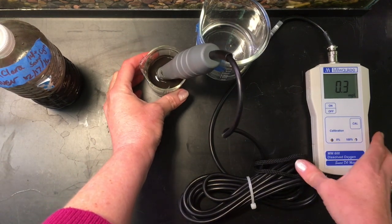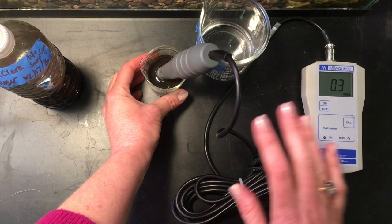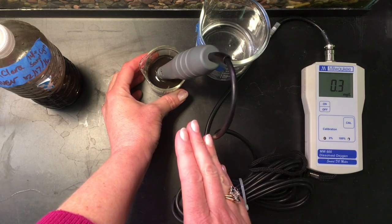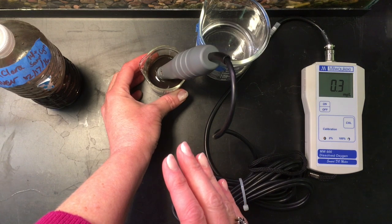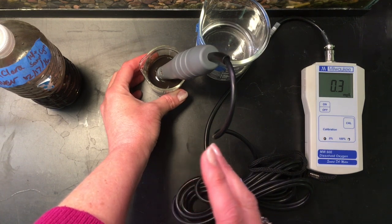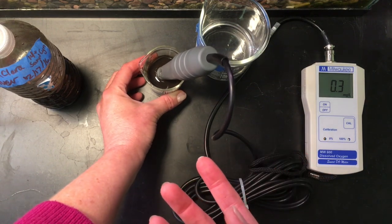After one minute, you can see that the number has stabilized at 0.3 milligrams per liter. So this is completely anoxic. This is almost zero oxygen in this water. And again, that's because there was so much debris and ash in this water from the fire.